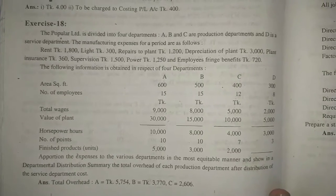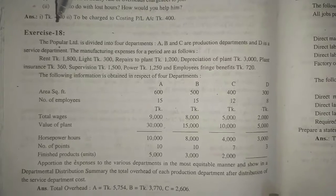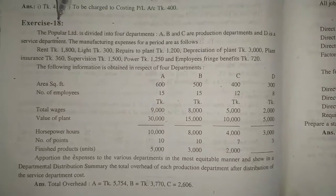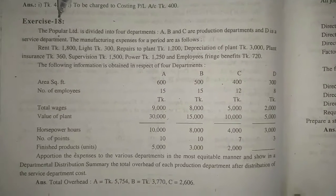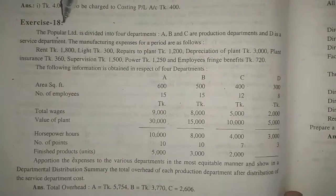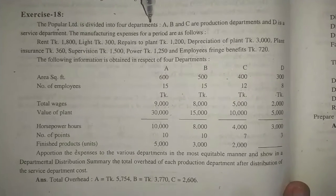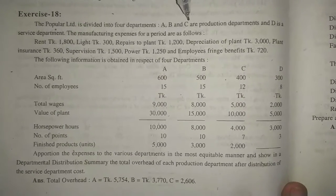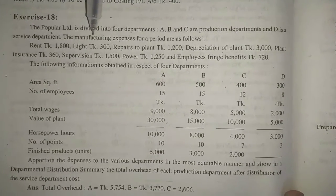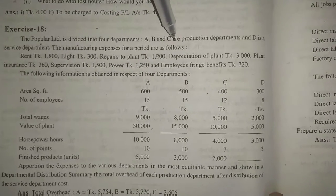The Popular Limited is divided into four departments. A, B and C are production departments and D is a service department. The manufacturing expenses for a period are as follows.